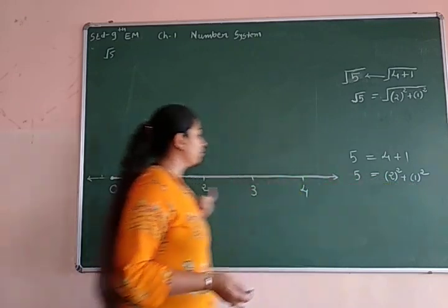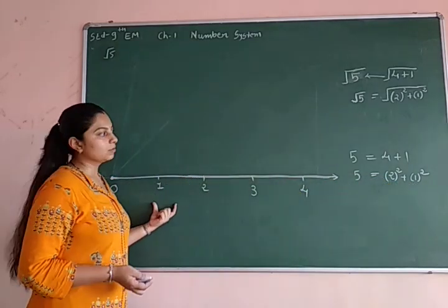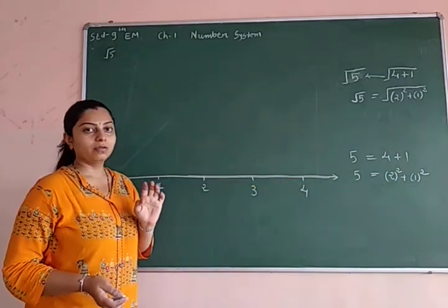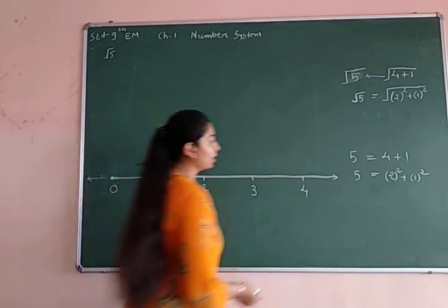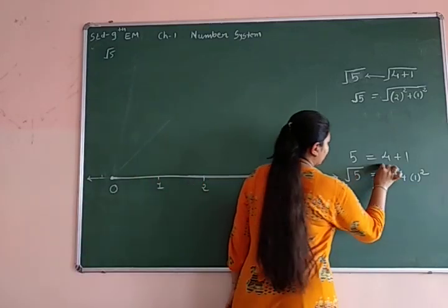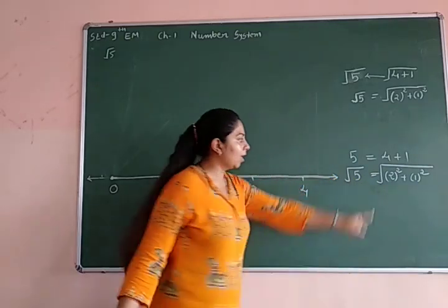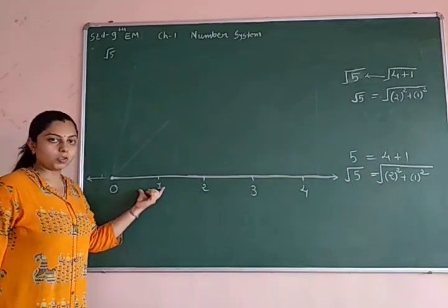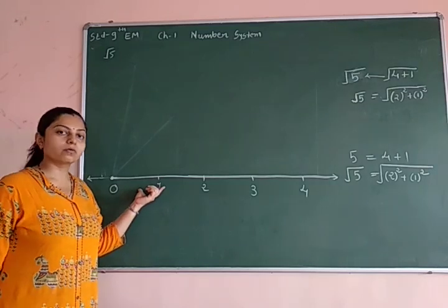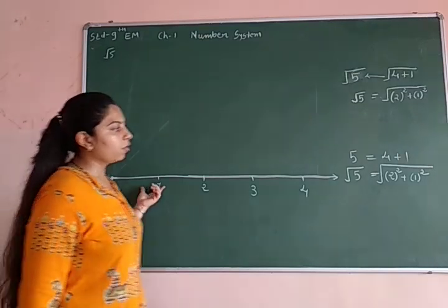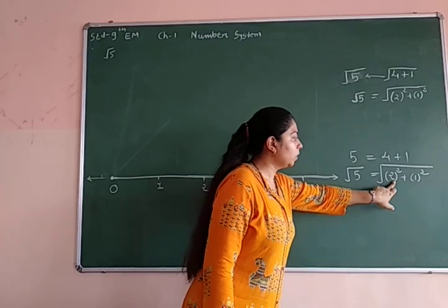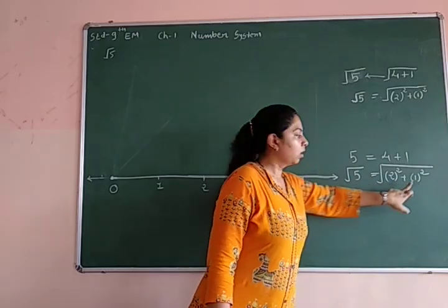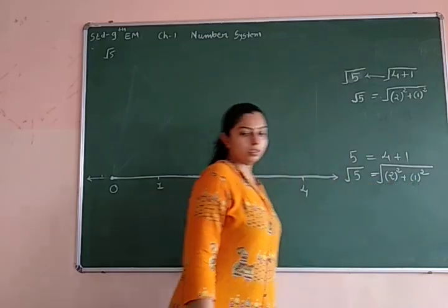So I am going to take the number line to create. So we can get root 5, root 5 number of matter. We are doing this. Anyhow, in this kind of formula, we can construct on this number line. We can get root 5. So for that, what do we want? 2 unit and 1 unit. 2 unit and 1 unit.